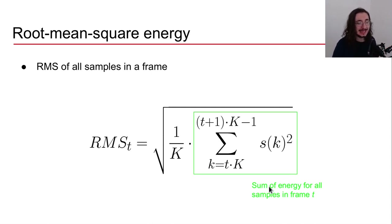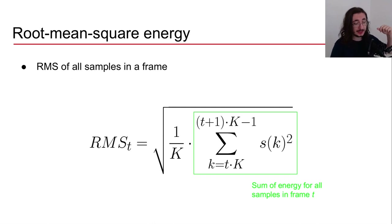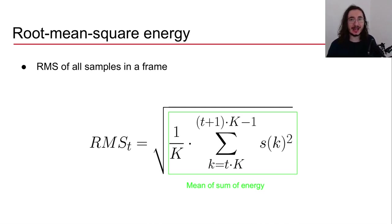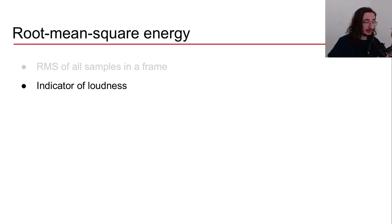We sum the energy for all samples in frame t using the summation symbol. Then we take the mean of that sum by dividing by the frame size K — the number of samples in the frame. Finally, we apply the square root over the whole expression, and that gives us the root mean square energy.